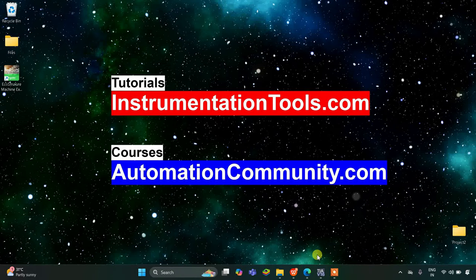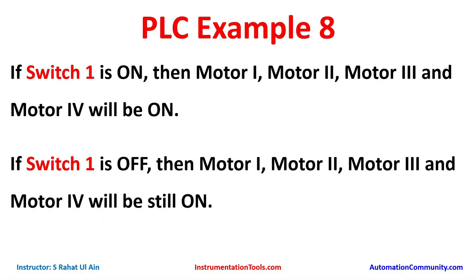Hello everyone, welcome to Automation Community. Today in this video we are going to discuss an example in which we will use a normally open contact and implement latching. Let's start example 8: if switch 1 is on, then motor 1, motor 2, motor 3, and motor 4 will be on. If switch 1 is off, then motor 1, motor 2, motor 3, and motor 4 will still be on.